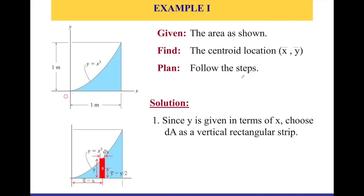Step one: it is easier to use a vertical differential element for the area dA, and that is what we have here — a vertical rectangular strip. I create a differential area element, and that is going to be my dA. The length of the rectangle is y, and I identify a differential element on the x-axis as dx, which is the width of the rectangle. We assume the width is dx because it is infinitesimally small.